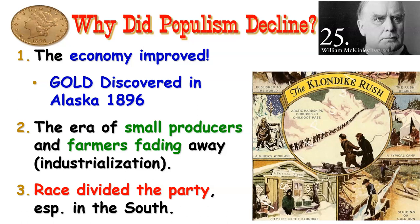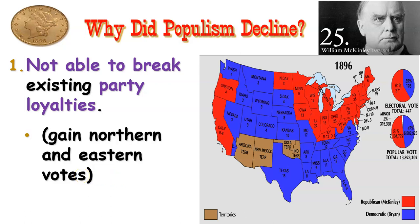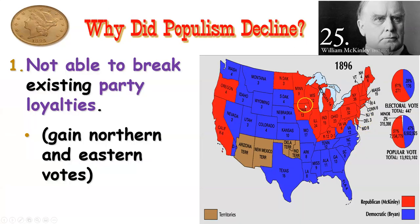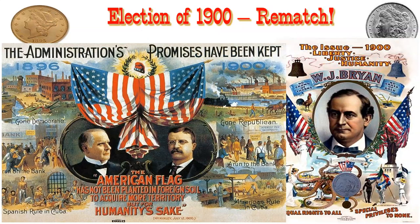The African-American vote wasn't included in the populist coalition as much as they would have liked, because of divisions in the South. They weren't able to break existing party loyalties. In the North, rural industrial workers were pressured to vote Republican. Northern and eastern votes were really the key. Most of the populist agenda is eventually adopted by the Democratic Party — so the People's Party is swallowed up, but the ideas aren't gone. It doesn't happen right away, but with more economic stress and another movement — the progressive movement — it will eventually happen.